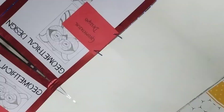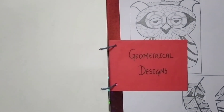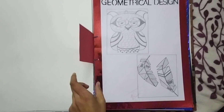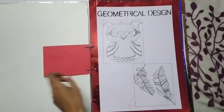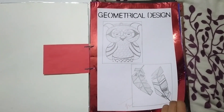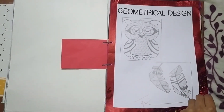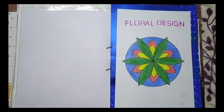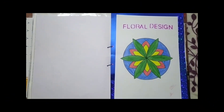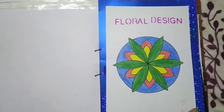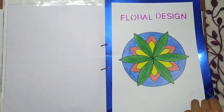Then we have 2 sheets of geometrical design — these are the 2 images showing the geometrical design and geometrical patterns. Our next sheet is about a floral design made with different beautiful colors.